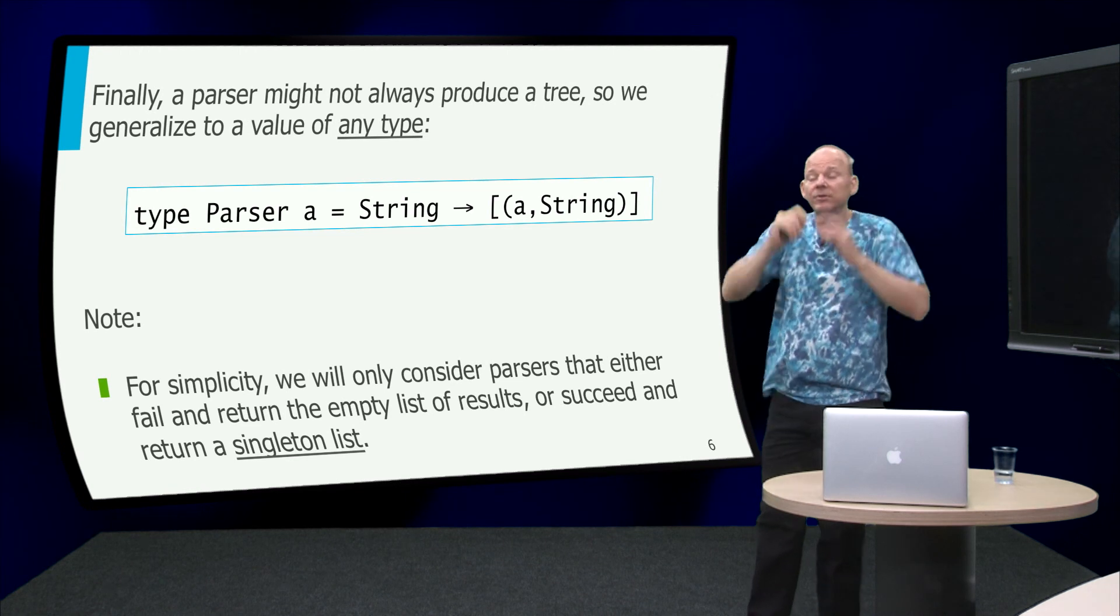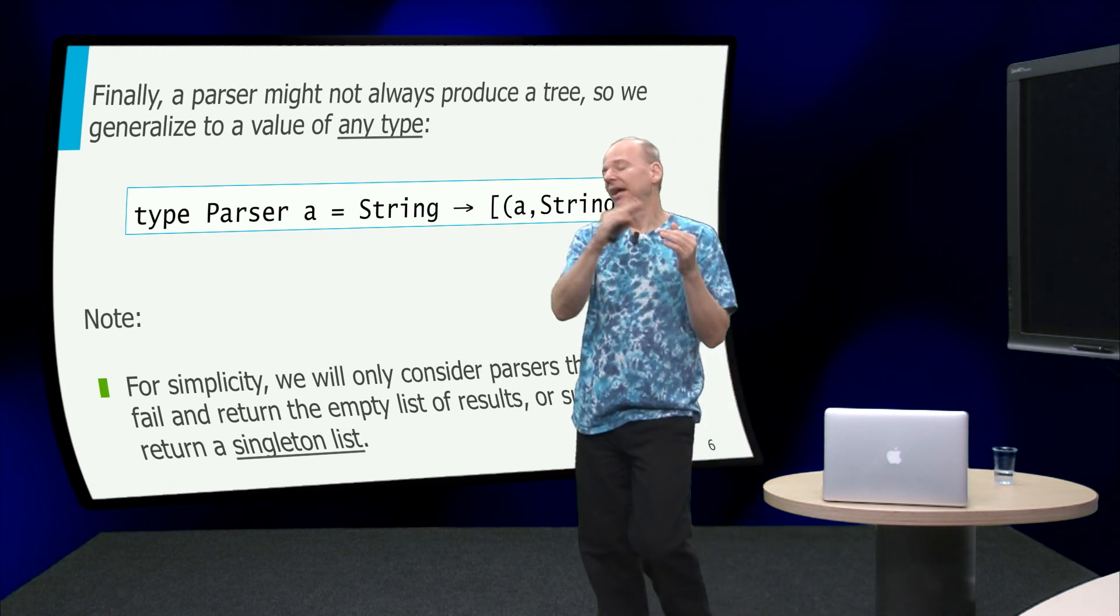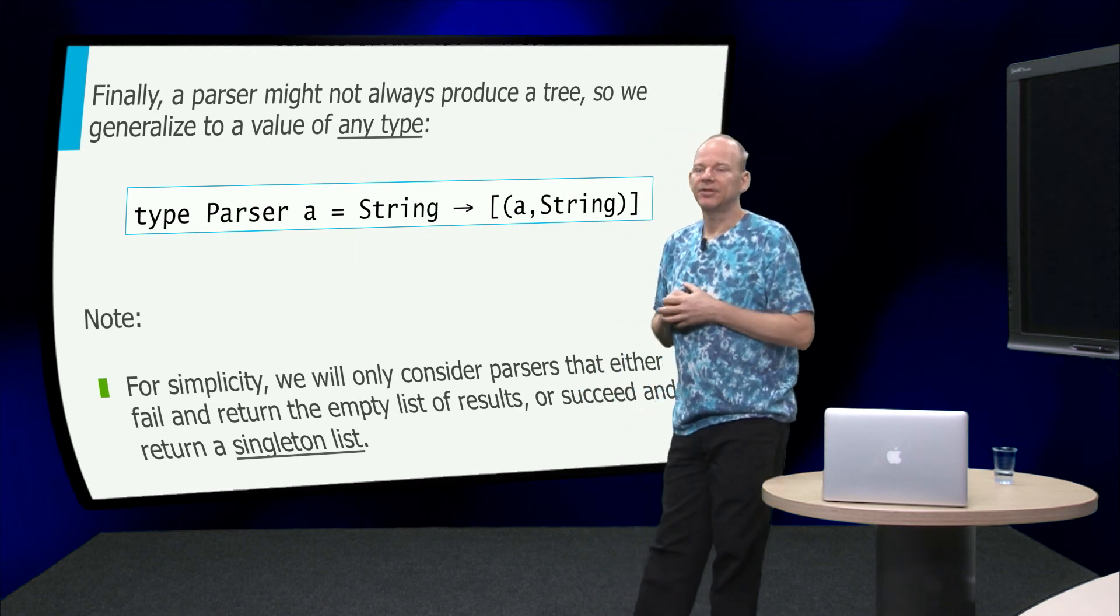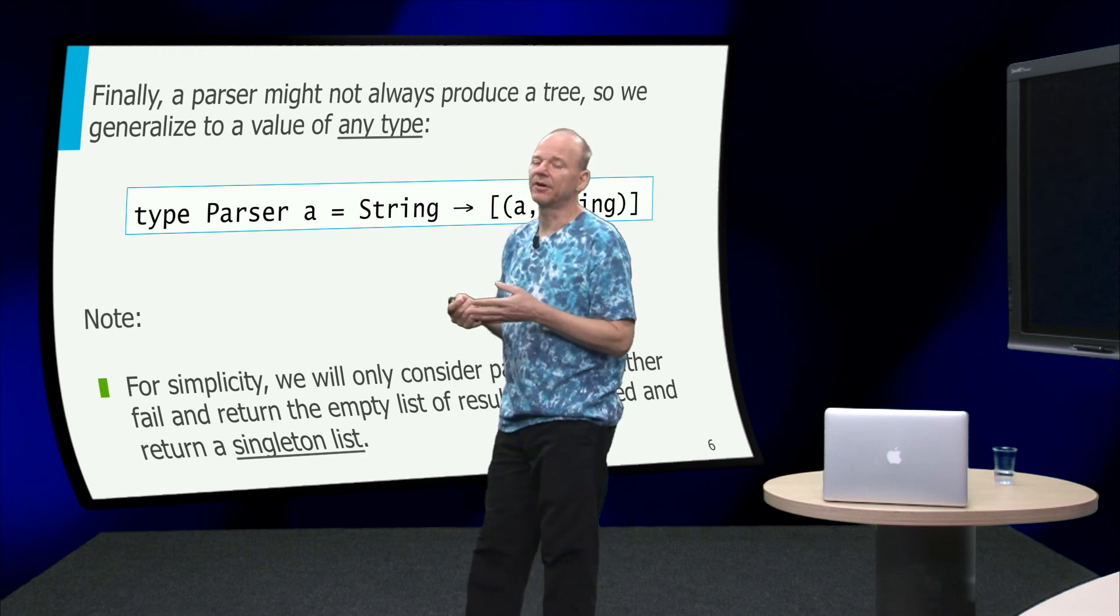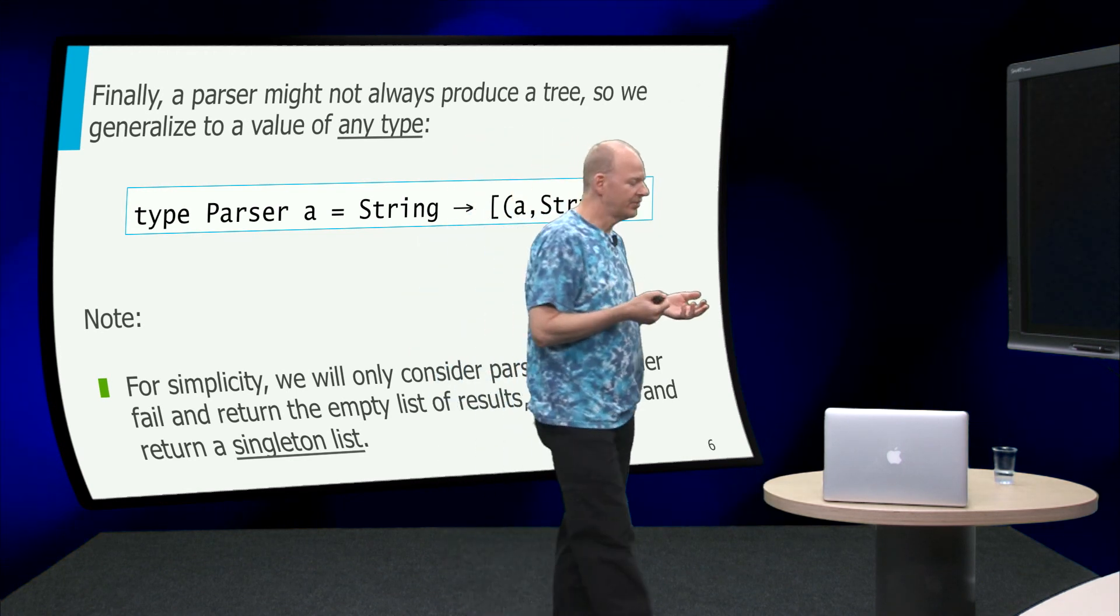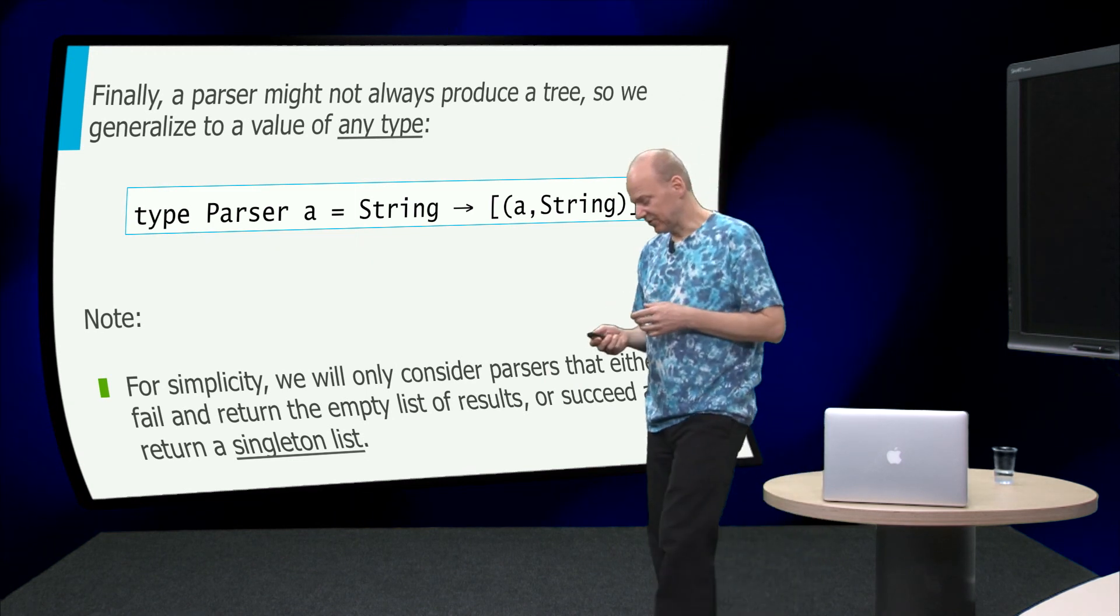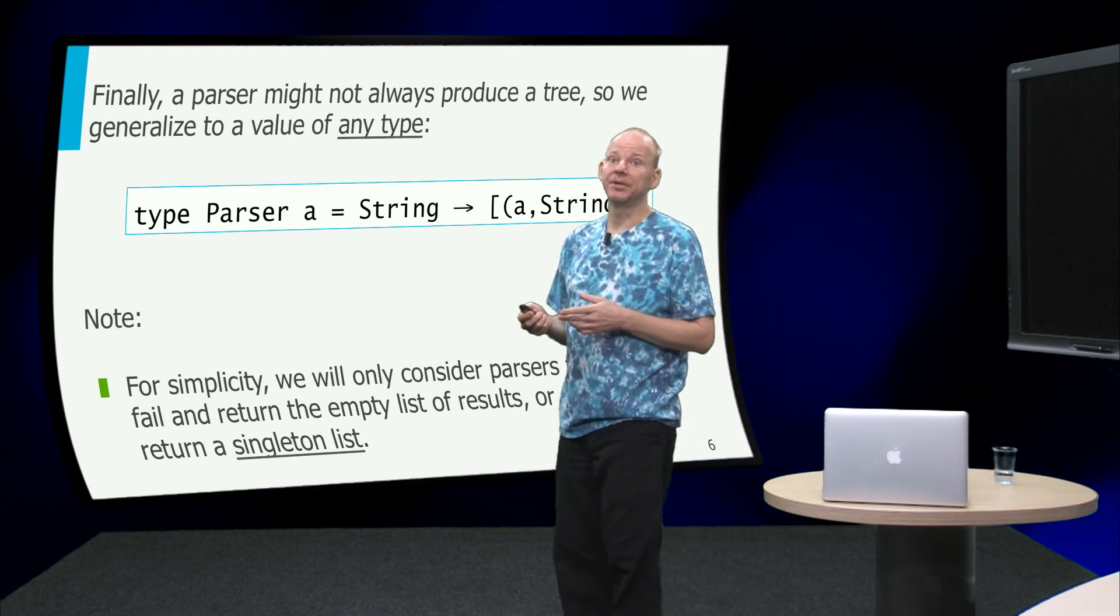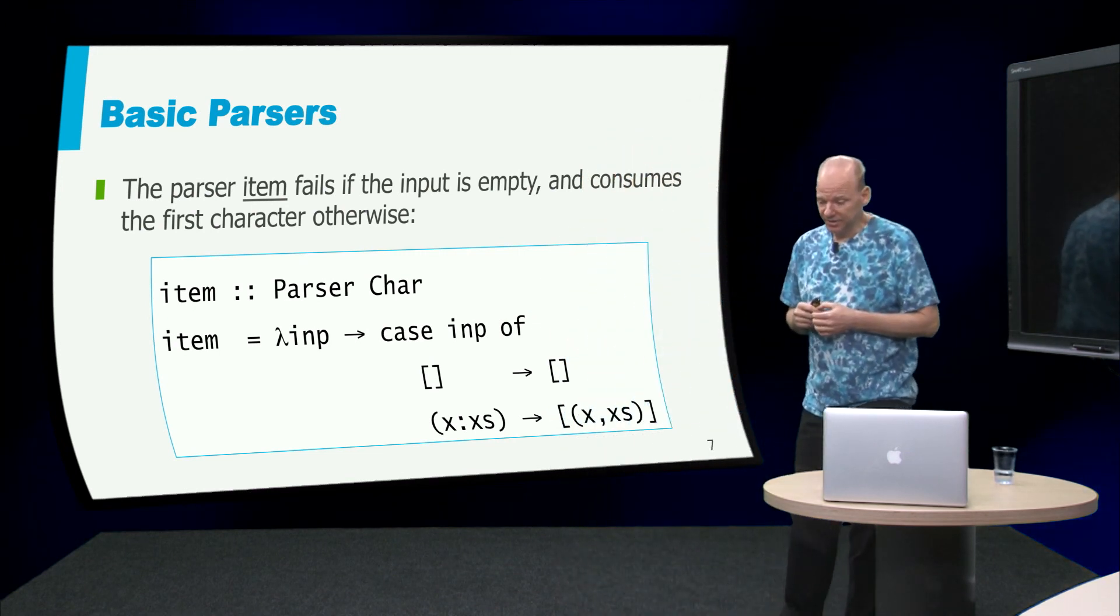You can, if you love the maybe type, you can take this chapter and rewrite everything using the maybe type, but I think what you will discover is that it is not more elegant than using lists. And in fact, I think the code with lists will be more elegant.